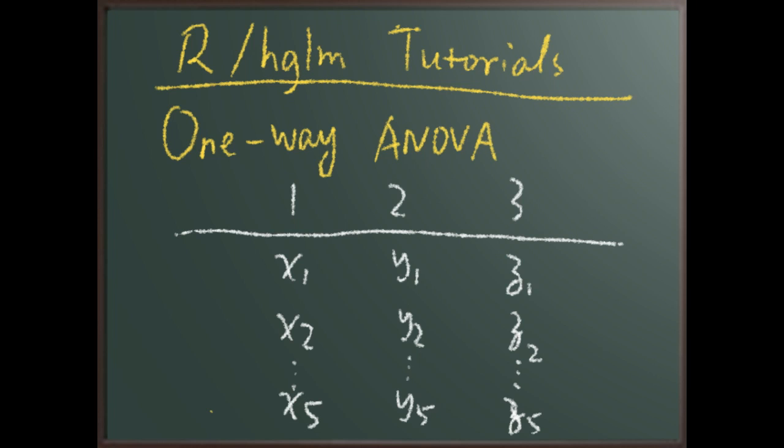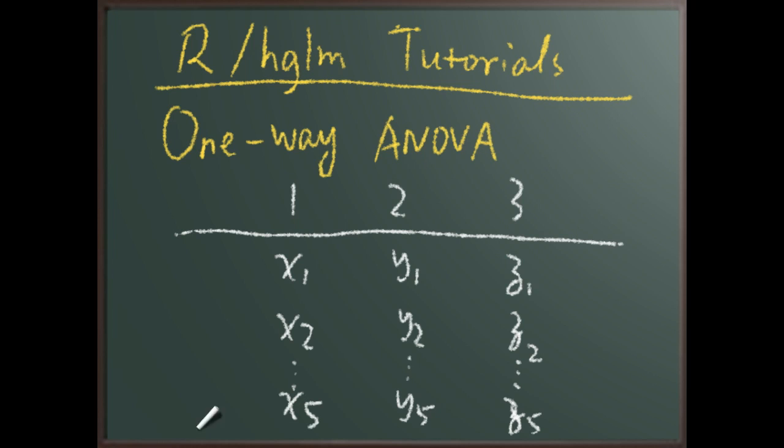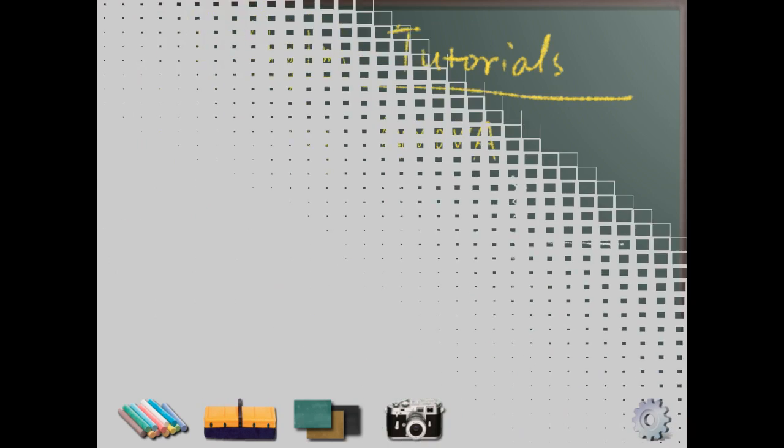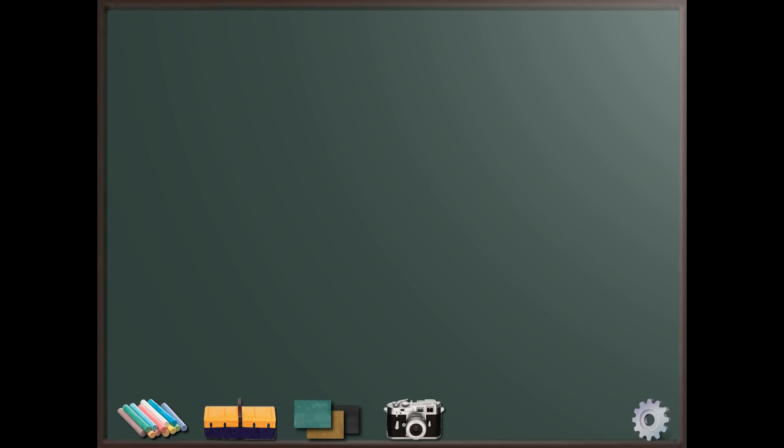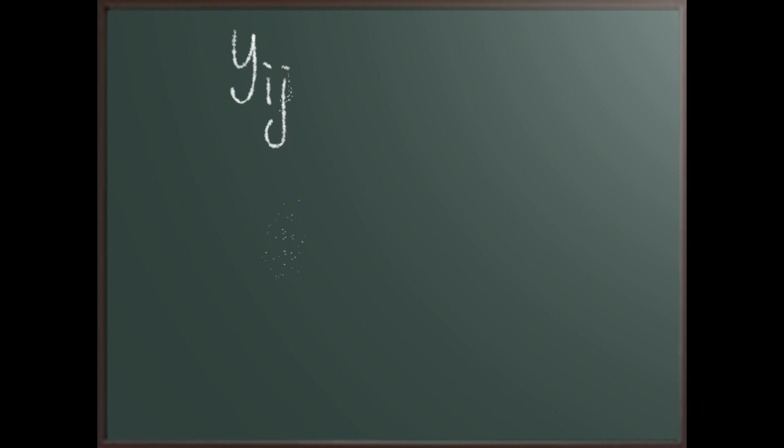This is what a traditional one-way ANOVA data situation looks like. Let's look at how this model should be written theoretically. Usually we write a one-way ANOVA model like this: y_ij, the observation for individual i and the j-th repeated measurement or observation, since we have several observations for each individual.